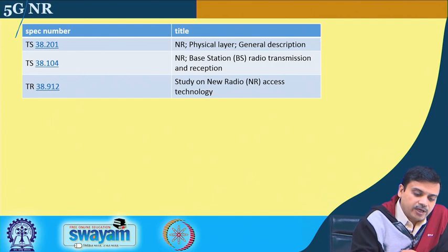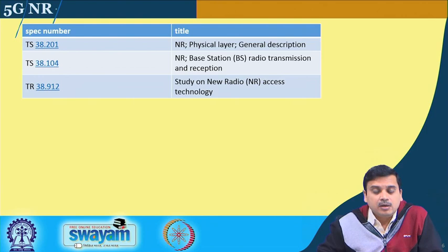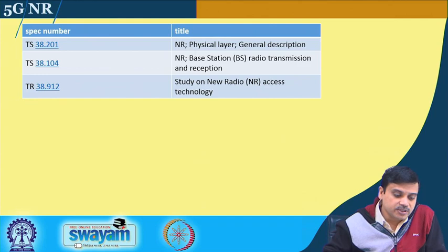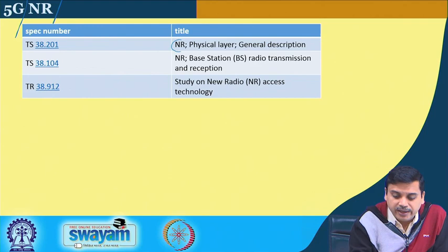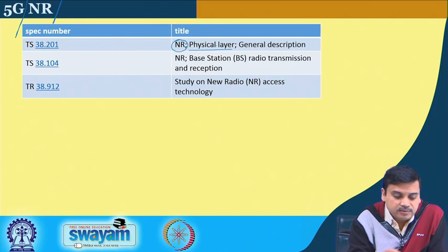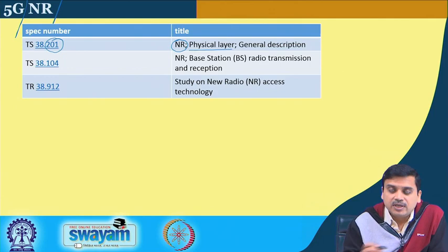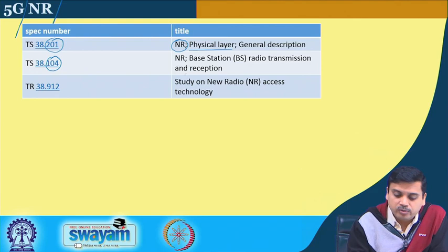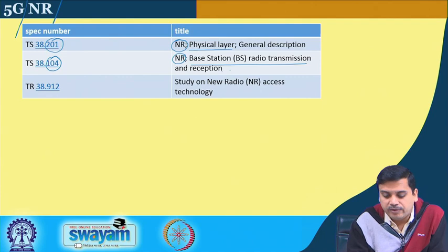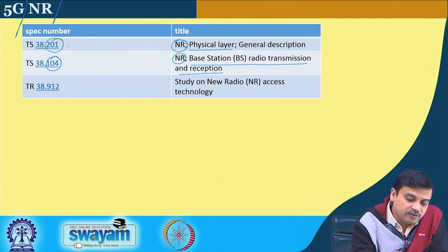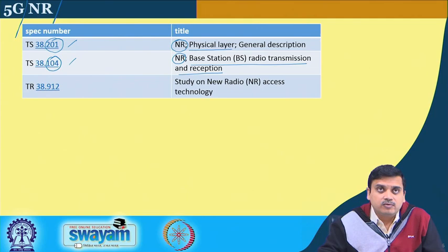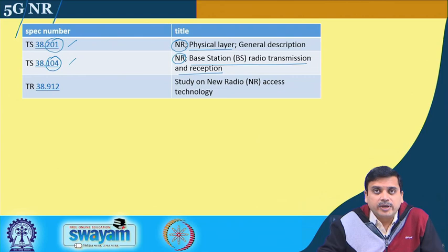There could be other organizations than 3GPP who could also come up with technical specifications, and if they meet the ITU requirement criteria they will be branded as 5th generation technology. The same thing happened with 4G and IMT Advanced. The 36-series produced specifications meeting IMT Advanced requirements; similarly the 38-series meets IMT 2020 requirements. When we look at the 38-series of documents we are essentially talking about 5G and NR from the 3GPP perspective. Document 38.201 covers the NR physical layer.